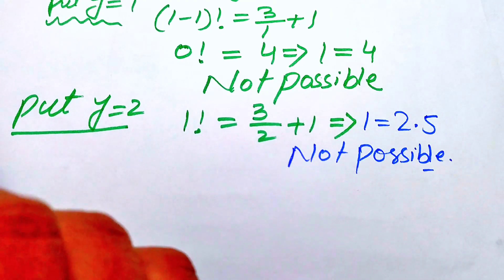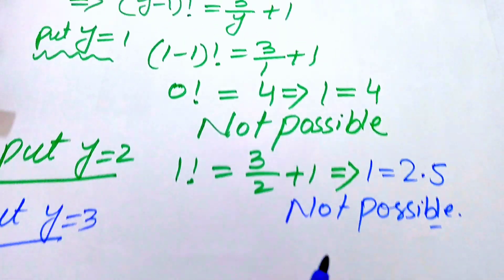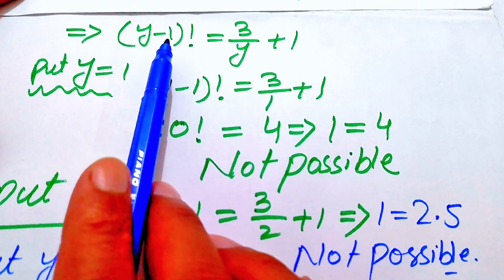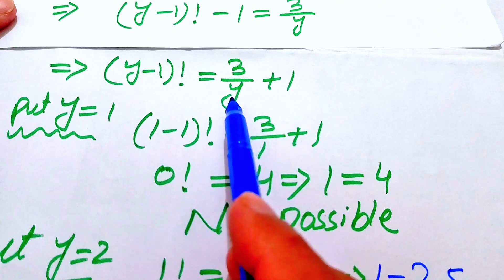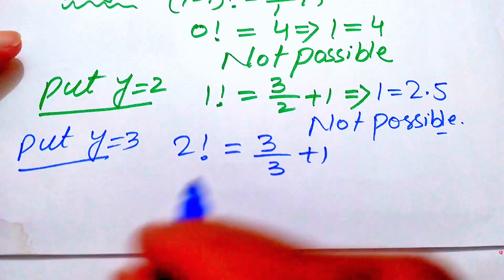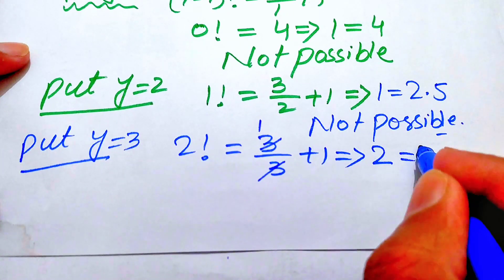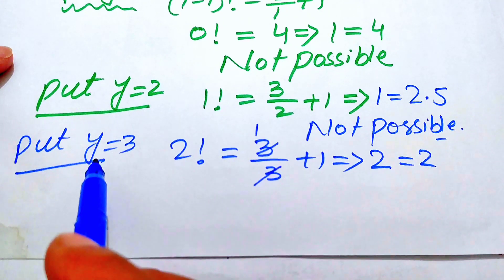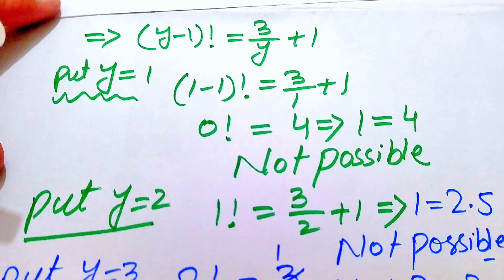Now substitute y equals 3: (3 minus 1) factorial equals 3 over 3 plus 1, which gives 2 factorial equals 3 over 3 plus 1. Simplifying, 3 over 3 equals 1, and 1 plus 1 equals 2, so 2 factorial equals 2. Since 2 factorial equals 2, this is true. Therefore y equals 3 is the solution.